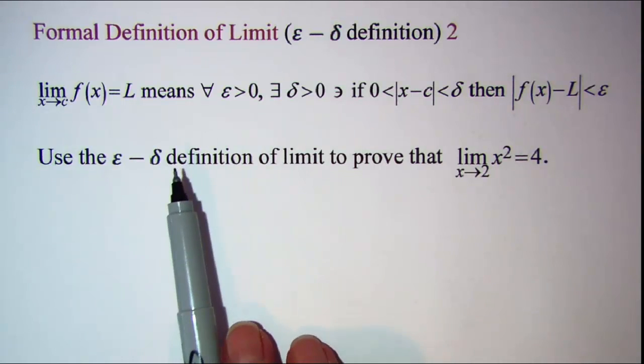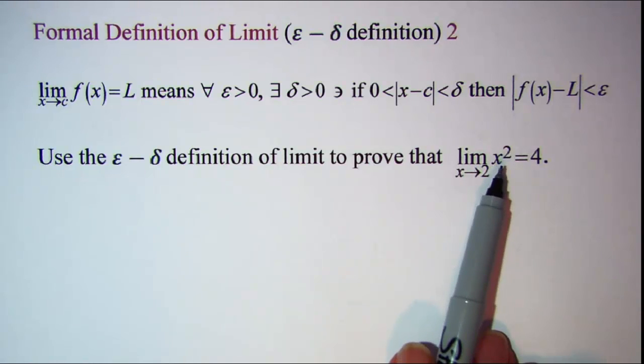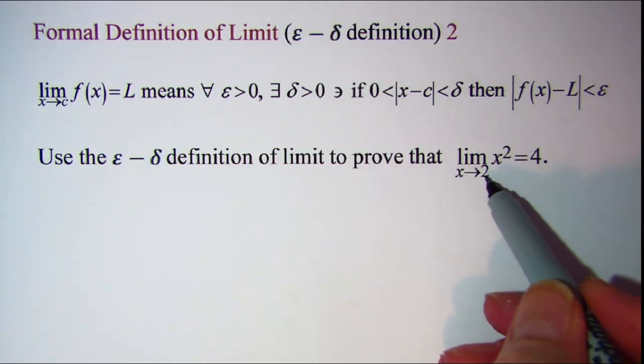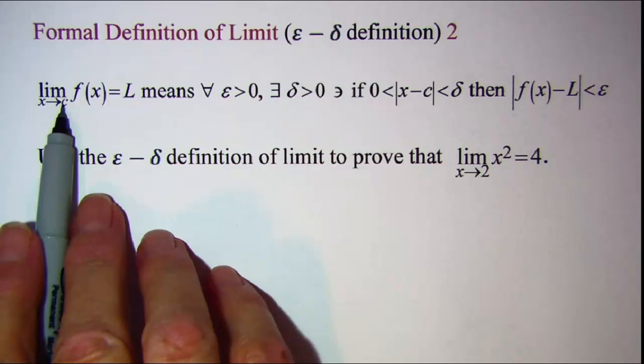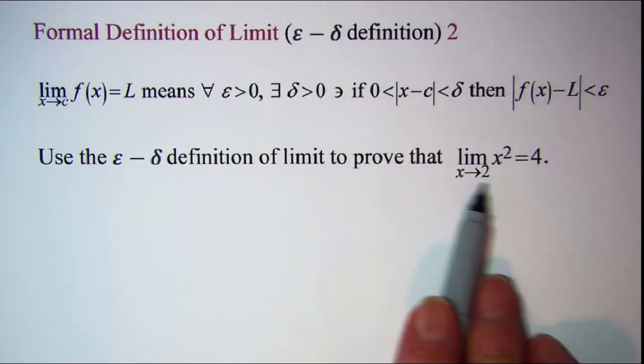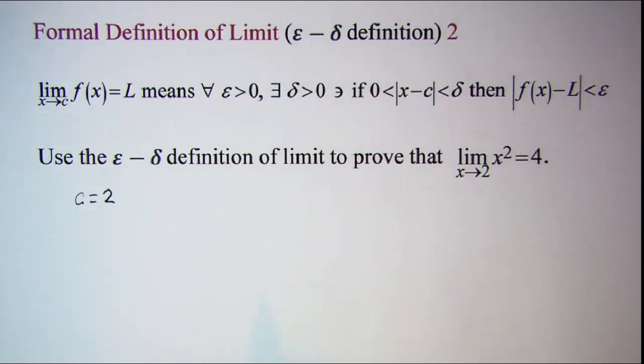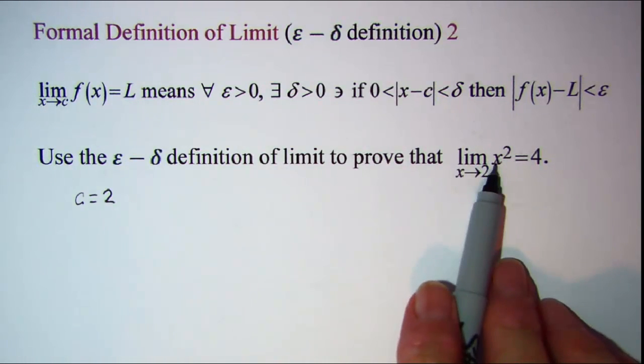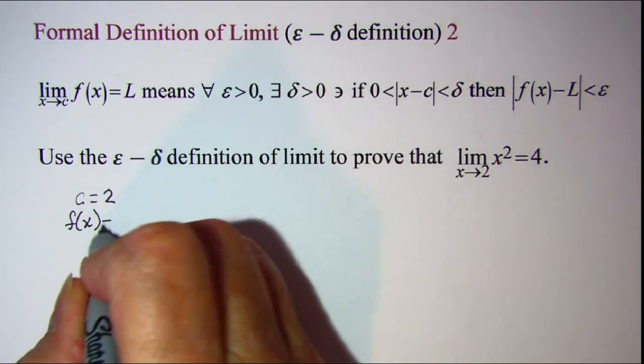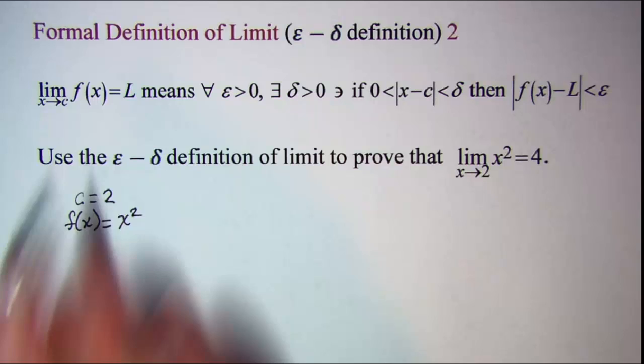So we'll be using this definition to prove that the limit as x approaches 2 of x squared is 4. We know that c is 2 because if you make your comparison here, x approaches c and x approaches 2. So c is 2. We also know that f of x is x squared, and we know that the limit is 4, so L is 4.